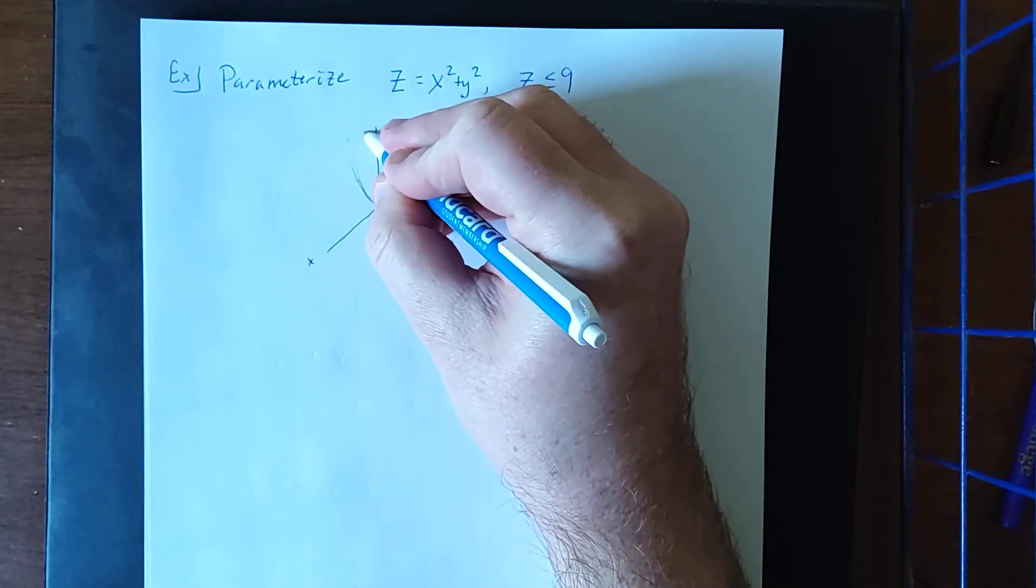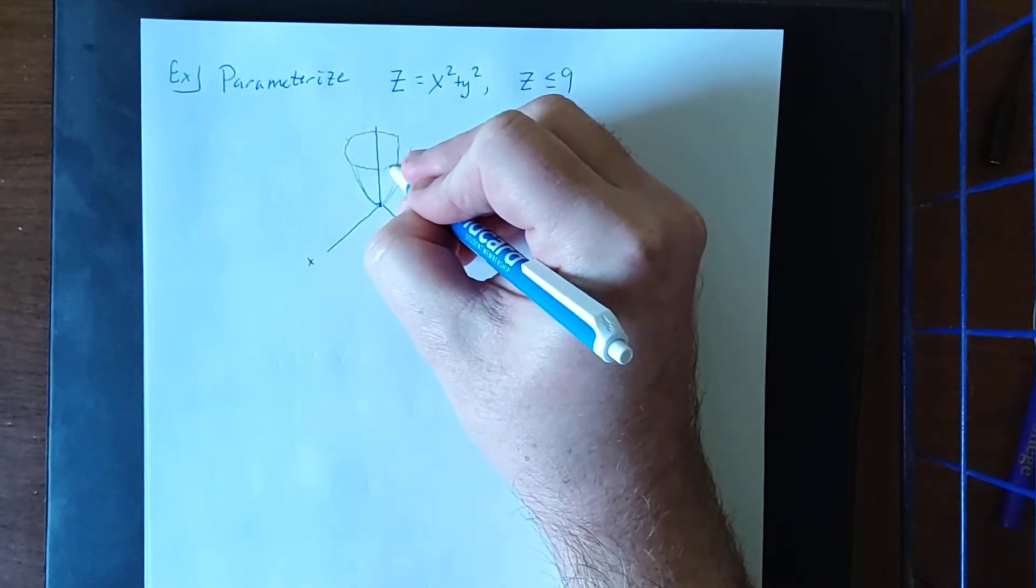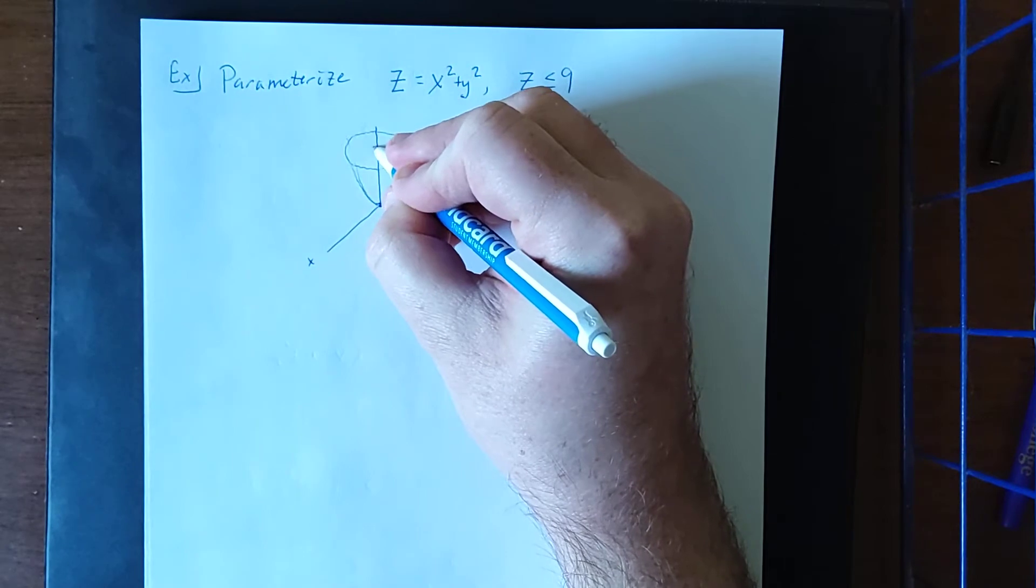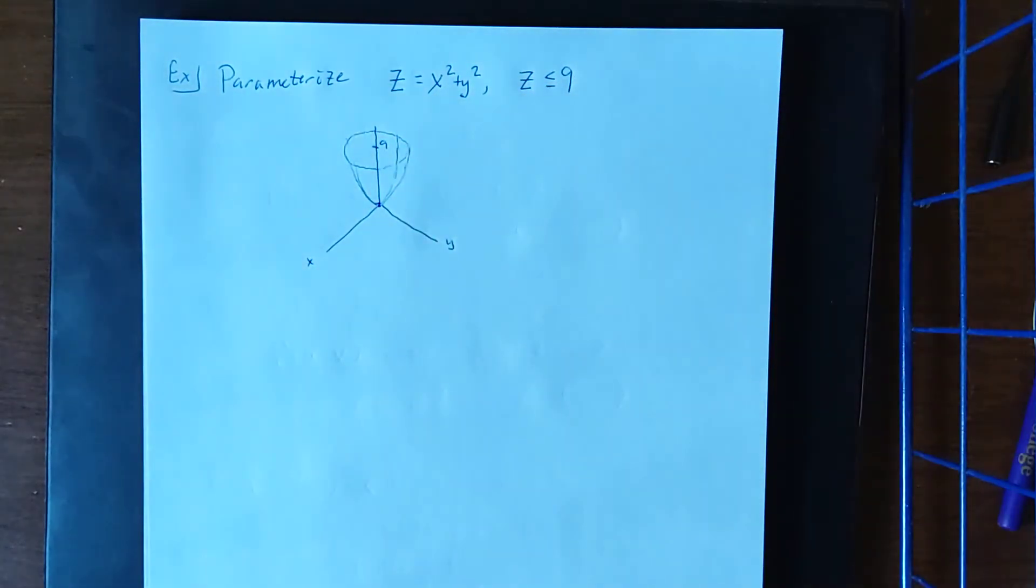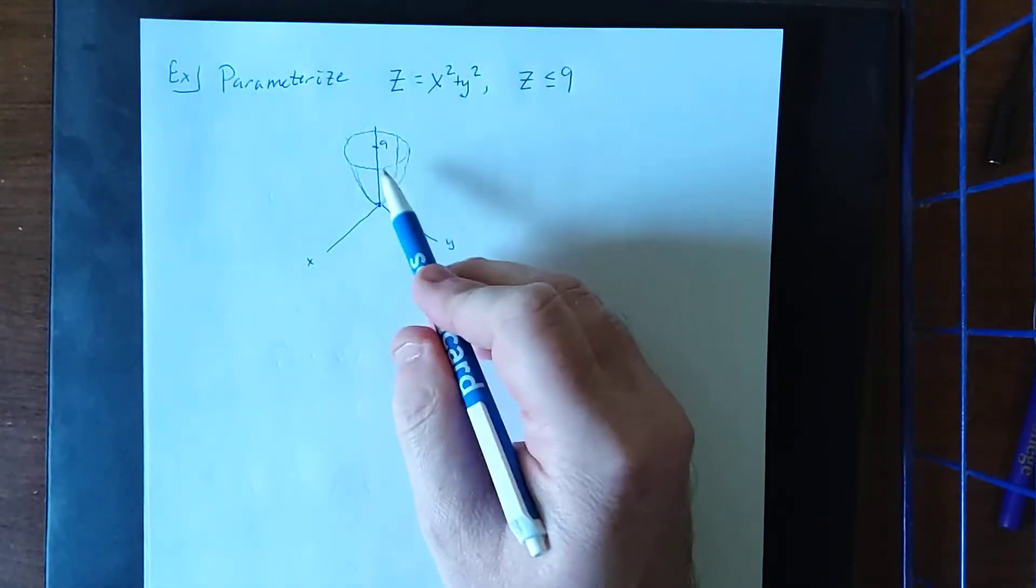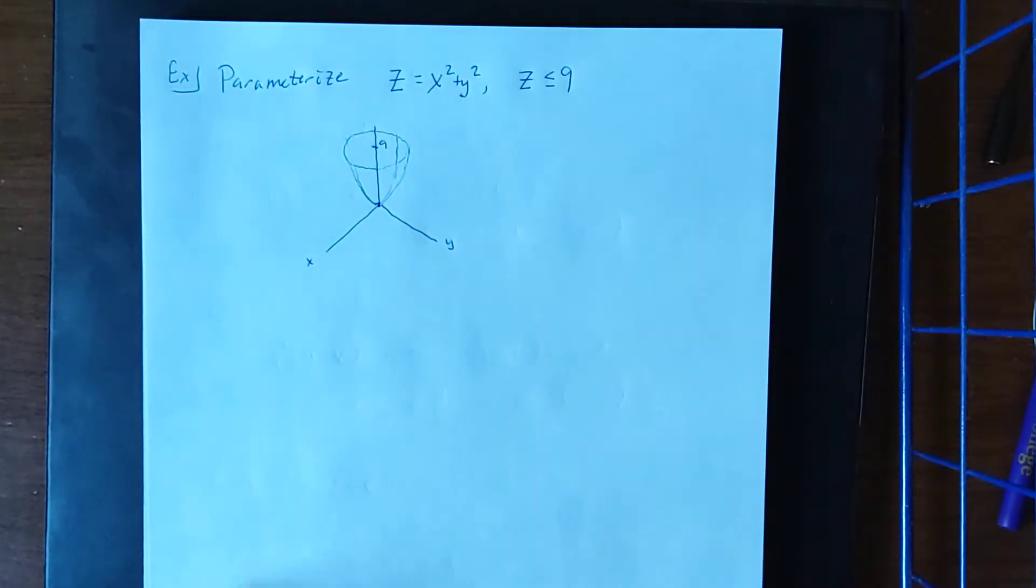Once we get up here we're going to connect these with a circle and we're going to mark off that this is taking place at z equals 9. So in three dimensions this is approximately what our surface looks like. What I'd like to do is parameterize this surface.